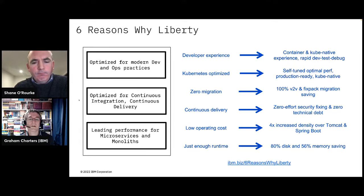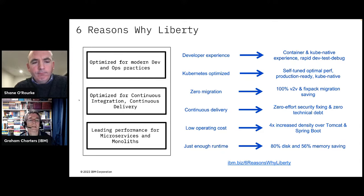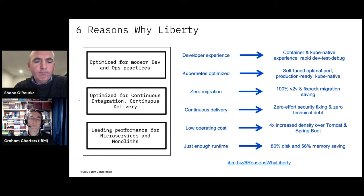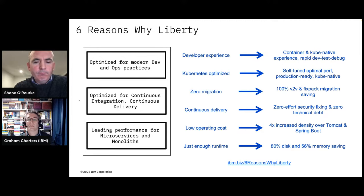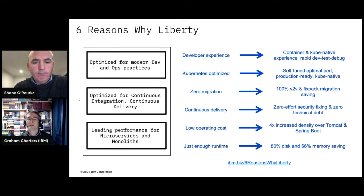We provide production-ready container images in Docker Hub and the IBM Container Registry, which I'll demonstrate. The next two reasons — zero migration and continuous delivery — are about optimizing Liberty's architecture to fit well with CI/CD. Zero migration means if you've got an application running on Liberty today, in three, four, or five years' time it will continue to run. We don't break or remove the APIs we provide, and we don't break the configuration. You can keep your application on Liberty and move up versions to get security fixes and performance enhancements without being forced to make changes just because a new release is coming out.